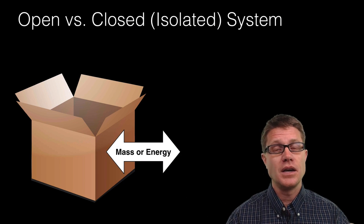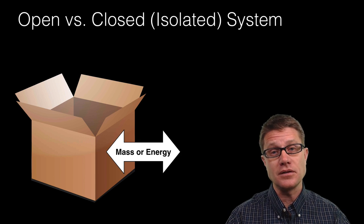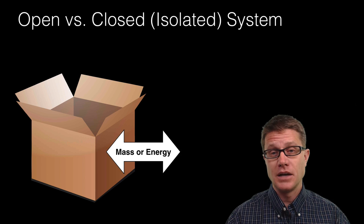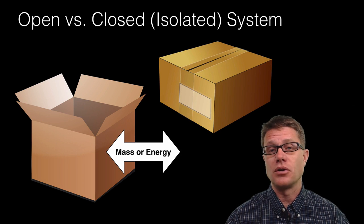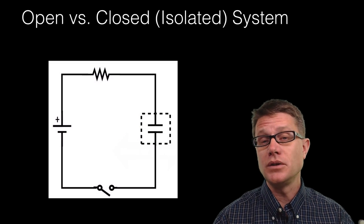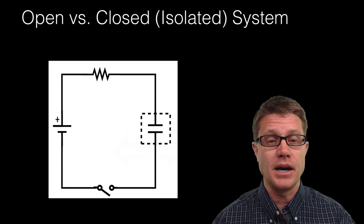An open system is any system where we can have matter and energy either entering into that system or leaving. And so for us to have an isolated system we have to have no movement of energy or matter into or out of that system. But once we do, once we define that closed system then the conservation laws apply.